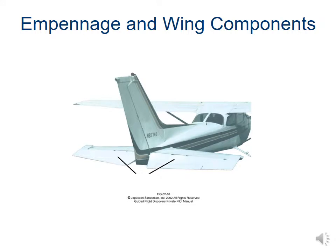Looking at the components of the empennage and the wings: the vertical stabilizer is the up-and-down part, bolted directly to the fuselage. It doesn't move and helps stabilize our position from left to right. The rudder is on the back of the vertical stabilizer and can move from side to side, helping us move the nose of the plane left or right — it doesn't necessarily steer us into a turn, but it does help point the nose in different directions.